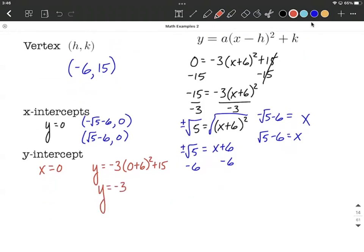I'm going to work the operations, order of operations inside the parentheses first. 0 plus 6 makes 6 squared plus 15 which is going to be negative 3. The exponent comes next, so we'll get 36 plus 15 here.